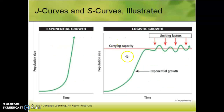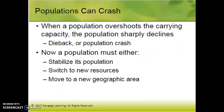Looking at an S-curve: as we hit our carrying capacity we're going to see overshoots and crashes. Population numbers are going to fluctuate until, theoretically, the line flattens out right at or just below the carrying capacity. When a population overshoots the carrying capacity we'll see a sharp drop-off or dieback — the population crashes. It's basically a fluctuation of too many, too few, too many, too few until the population levels off and stabilizes.